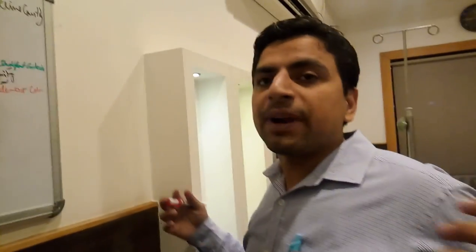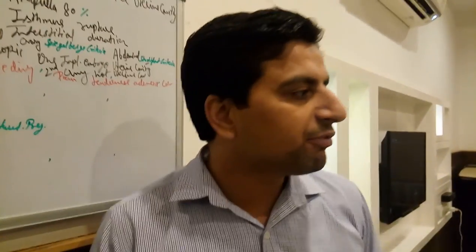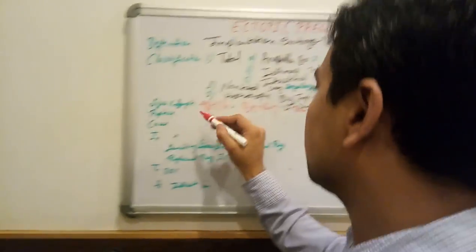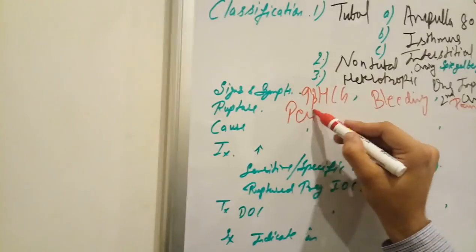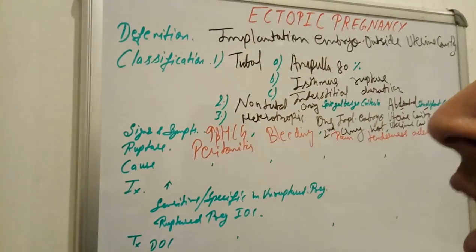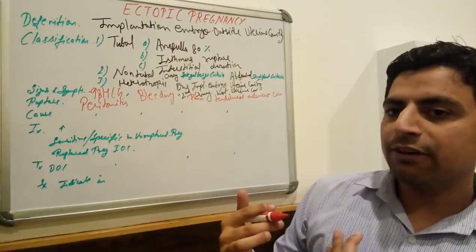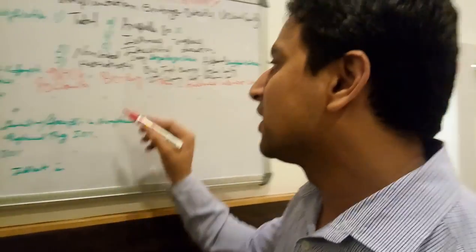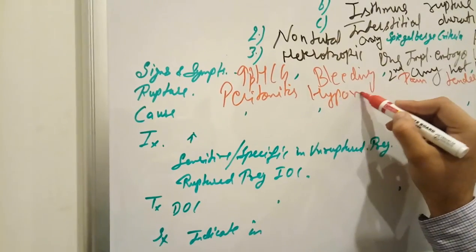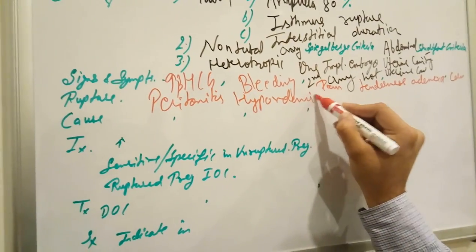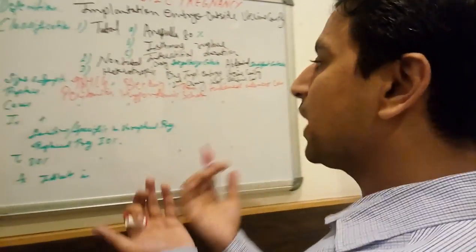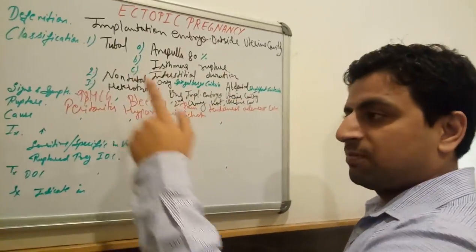In the case of a ruptured ectopic pregnancy, peritonitis occurs due to the rupture. This causes peritonitis and hypovolemic shock — hypovolemic because of blood loss. There is also severe tenderness due to the peritonitis. This is a very critical condition that needs to be managed with surgery.